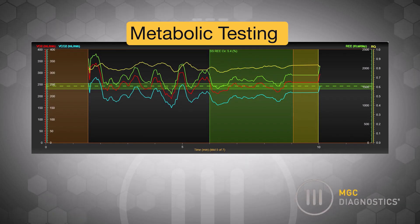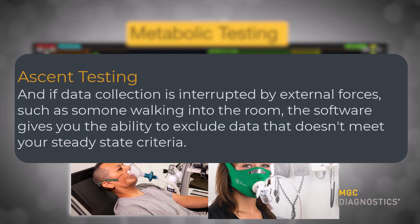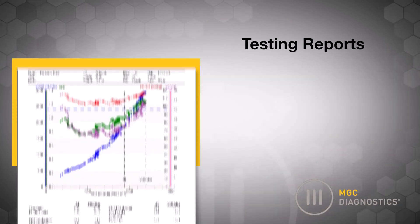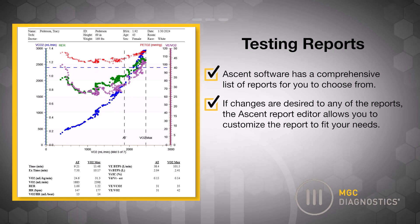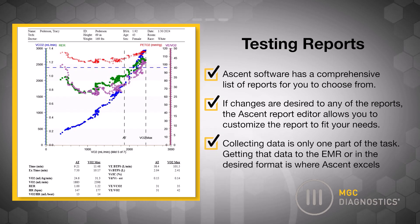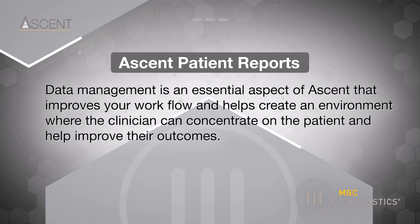Metabolic testing gives you all of the great features of exercise testing in order to collect data on spontaneously breathing patients. And if data collection is interrupted by external forces, such as someone walking in the room, the software gives you the ability to exclude data that doesn't meet your steady-state criteria. When testing is complete, Ascent software has a comprehensive list of reports for you to choose from. If changes are desired, the Ascent report editor allows you to customize the report to fit your needs. Getting that data to the EMR or in the desired format is where Ascent excels. Data management is an essential aspect of Ascent that improves your workflow and helps create an environment where the clinician can concentrate on the patient and help improve their outcomes.